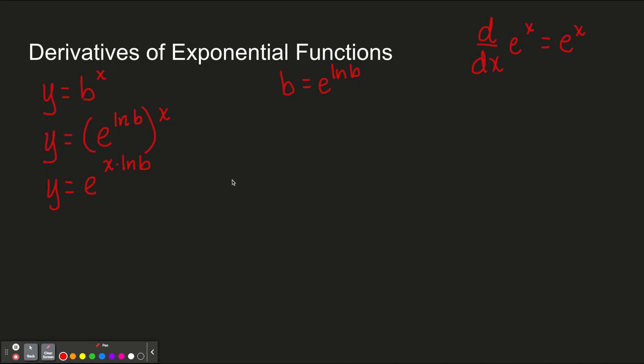To take the derivative here, I'm going to use the chain rule. So u will equal x times the natural log of b, y will equal e to the u. So what we've done now is we've rewritten everything. We started with y equals b to the x, but we've rewritten it in a way where we have two things that we know how to take the derivative of.